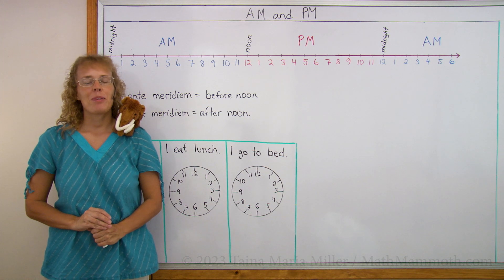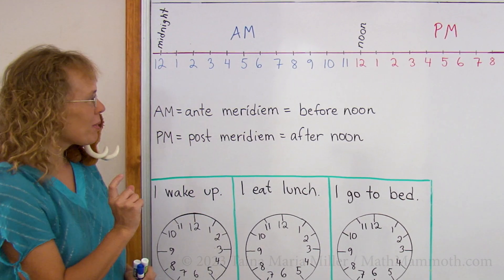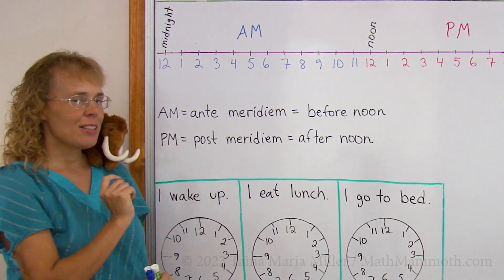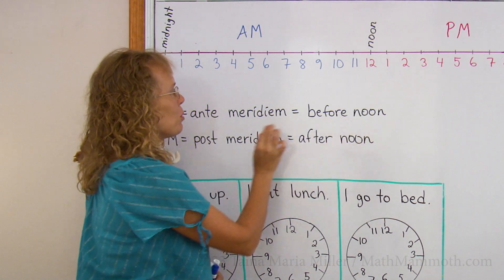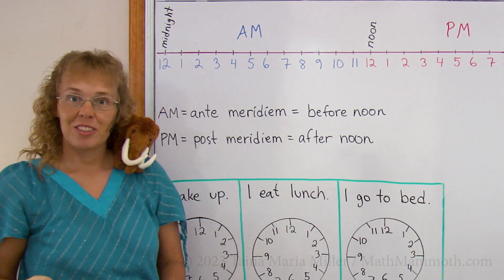In this lesson we're going to study AM and PM. And what are those AM and PM? I wrote them here. AM means ante meridiem from Latin. It means before noon. And then PM, post meridiem, means after noon.